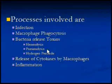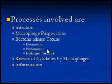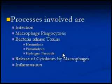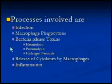Pneumolysin is another toxin that creates holes in host cells, again to release their contents, which is also used by bacteria as food. Hydrogen peroxide is another toxin released by Streptococcus pneumoniae that damages the surrounding tissue.